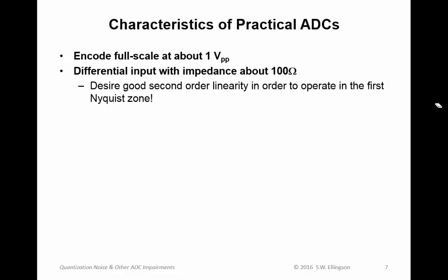Most ADCs are designed to have differential input with an impedance of about 100 ohms. And that's because we desire good second-order linearity. If we have to operate in the first Nyquist zone, the second-order harmonics will likely also end up in the first Nyquist zone. And even if they don't, they will end up in the second Nyquist zone and we'll have to deal with them as alias signals. Now if you look at these two properties, you can quickly work out the full-scale power is typically about plus 10 dBm.